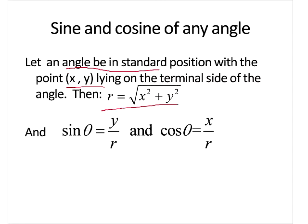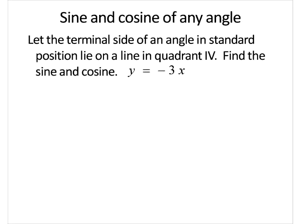So let's jump into an example. Let the terminal side of an angle in standard position lie in quadrant 4. Find the sine and cosine, and it's given by this function, okay.